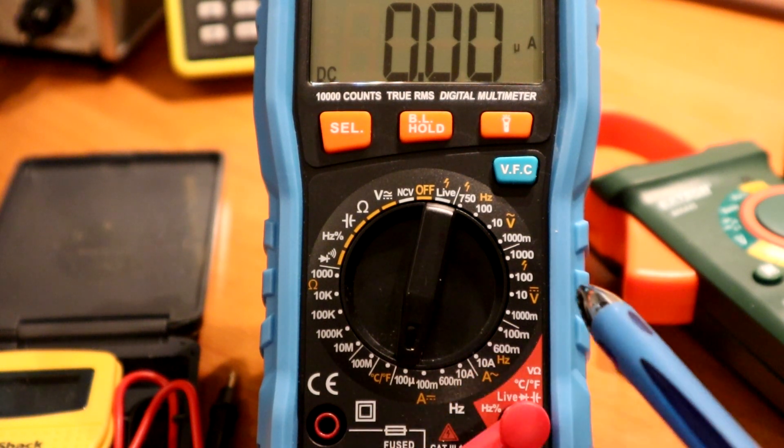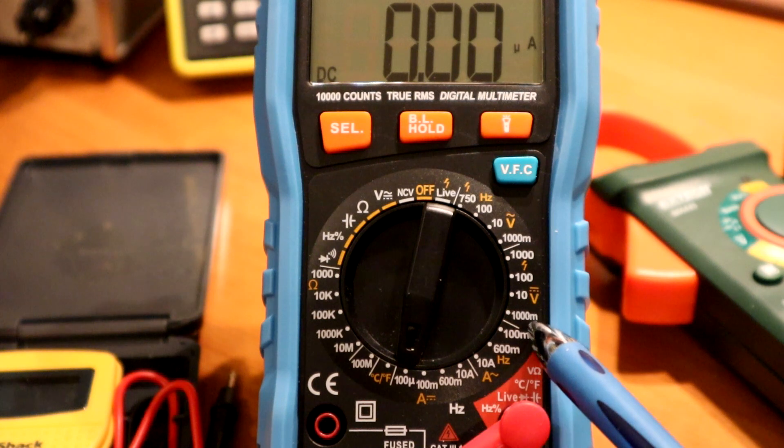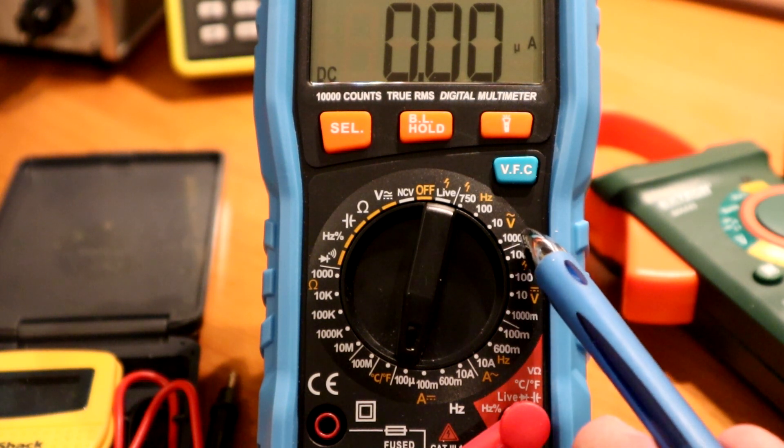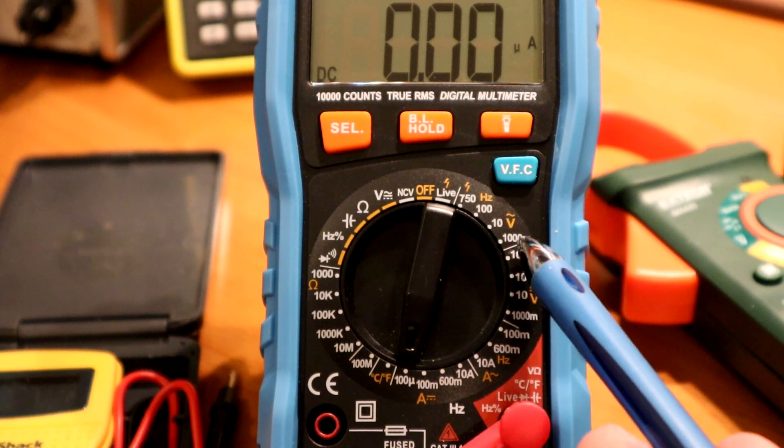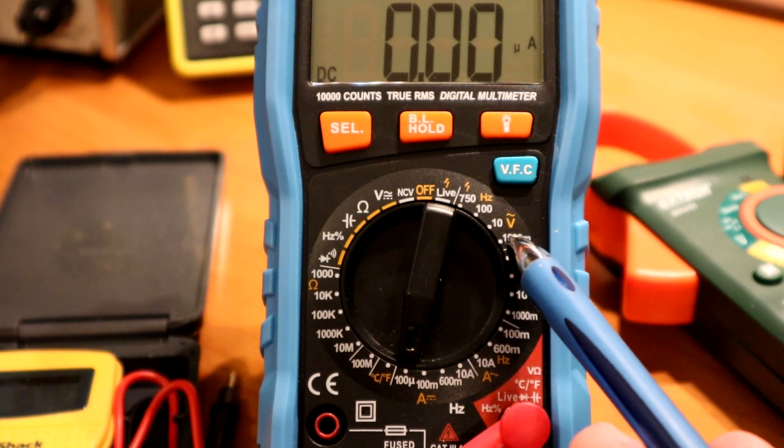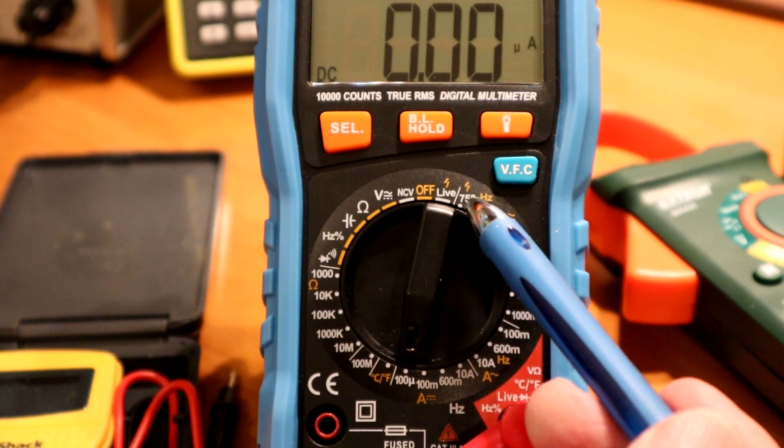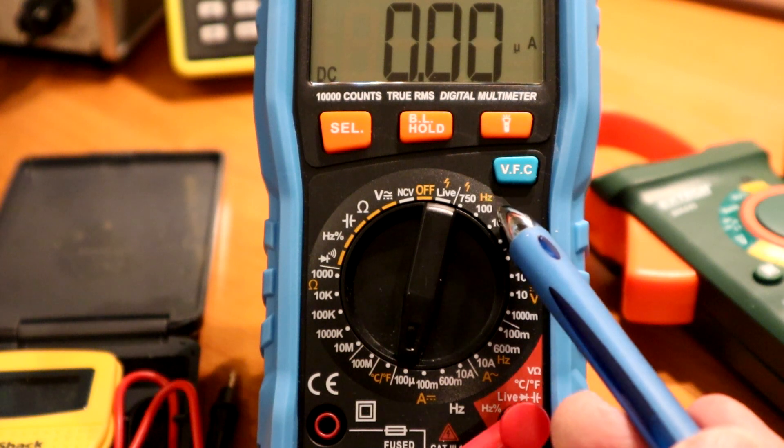Moving on beyond that, we have the DC volts and AC volts is up here from 1 volt, 1000 millivolts, 10 volts, 100 volts, or 750 volts max.